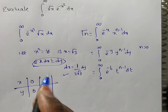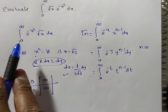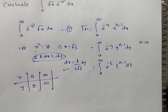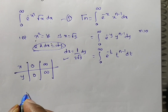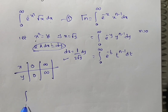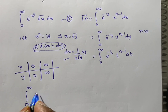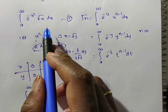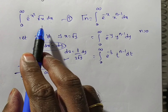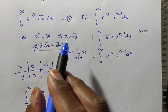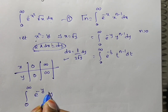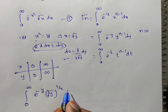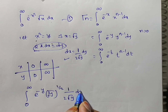Now substitute the x squared value, dx value, and the limits into the definition of the gamma function. The limits of y are 0 to infinity. E to the power of minus x squared becomes e to the power of minus y. Root x equals root y, which is y to the power 1 by 2. And dx equals 1 by 2 root y dy.